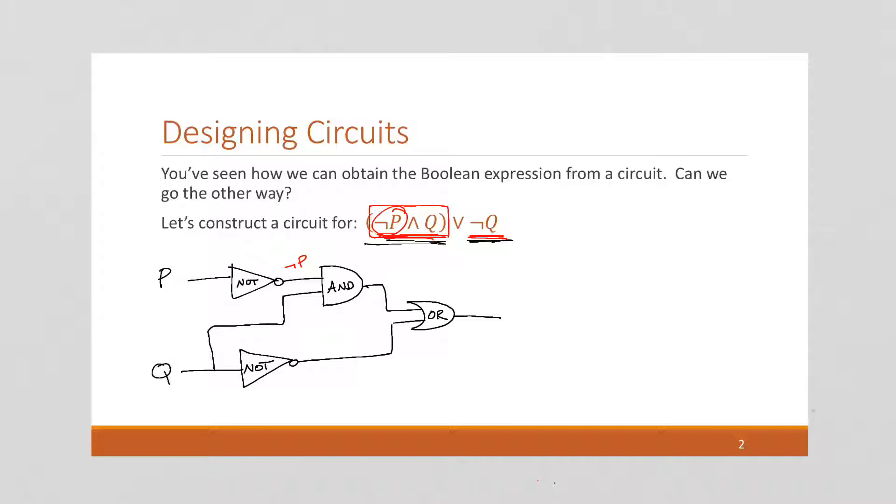So, if we're tracing through, this one is Q. So, this is NOT P and Q, just like we wanted. Over here is NOT Q. And ORing them together would give us NOT P and Q OR NOT Q, which is exactly what we had up here to start with.